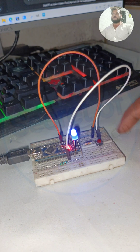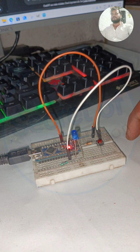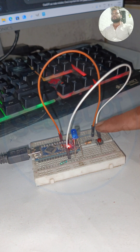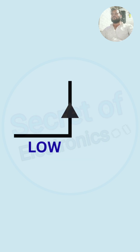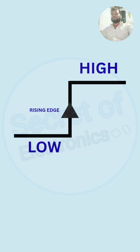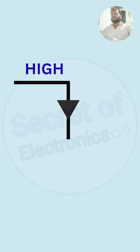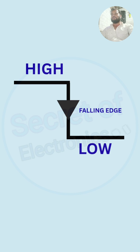Your microcontroller can detect a button press immediately. How does it know the exact moment the signal changes from low to high? It is called edge detection. A rising edge means the signal changes from low to high, and a falling edge means it changes from high to low.